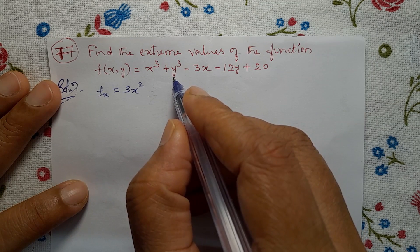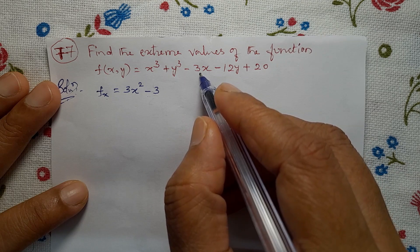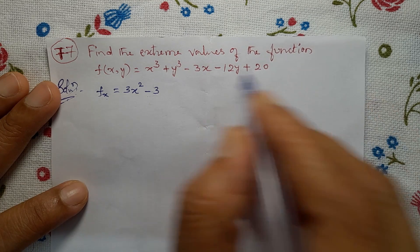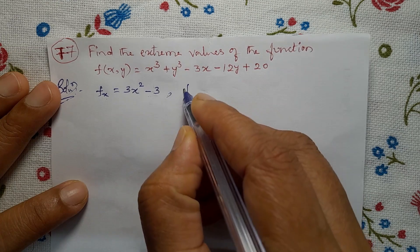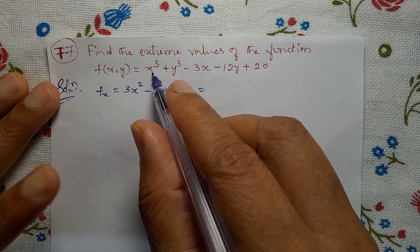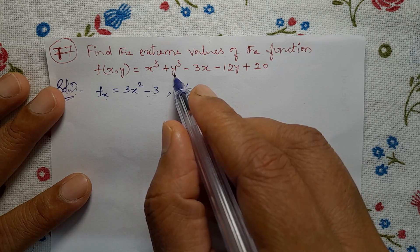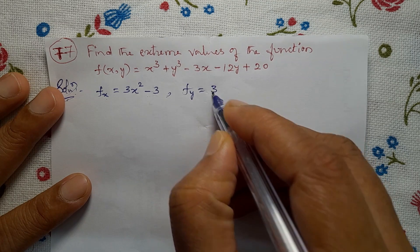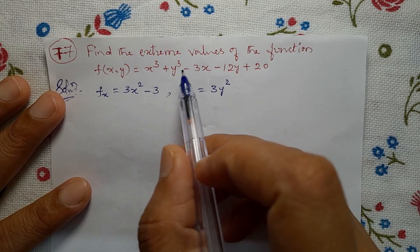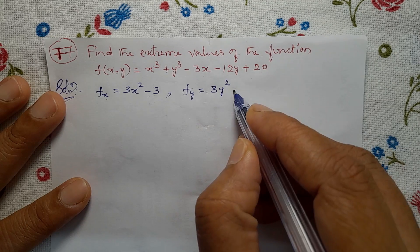Next, find Fy, which is the partial differentiation of f(x,y) with respect to y. So partial differentiation of x³ with respect to y is 0, because x is the other variable treated as constant. Partial differentiation of y³ with respect to y is 3y². The term -3x gives 0, and partial differentiation of -12y gives -12. So Fy = 3y² - 12.